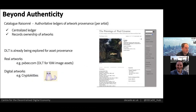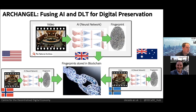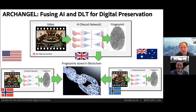We trialled this technology across five national archives around the world: the UK, US, Norway, Estonia, and Australia. It's the very first example of a public decentralized trust model for digital preservation across national archives, and it was very well received.